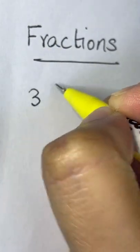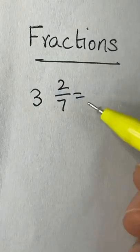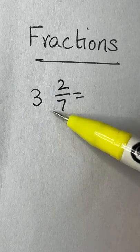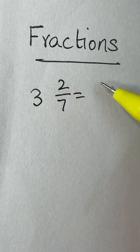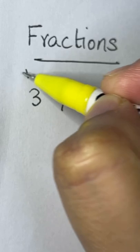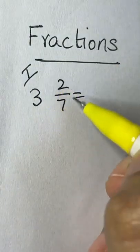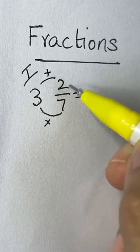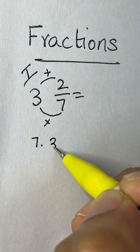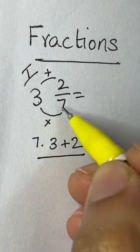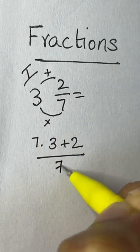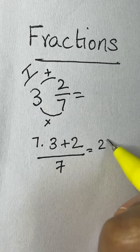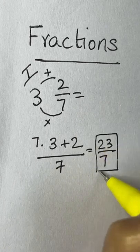If you have 3 and 2/7ths, this is a mixed number. A mixed number is actually a combination of a whole number and a fractional part. To convert it to an improper fraction, we go in a cyclic way from the bottom: 7 times 3 is 21, 21 plus 2, divided by the same denominator 7. So 7 times 3 plus 2 gives you 23 over 7.